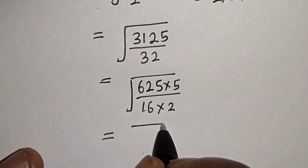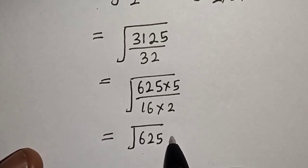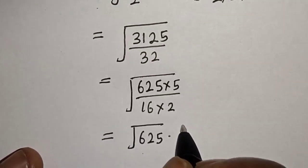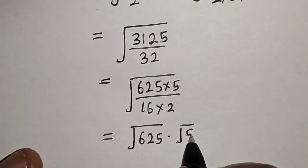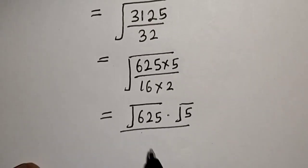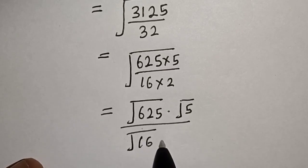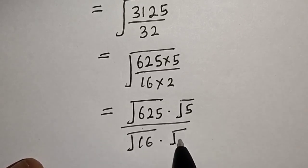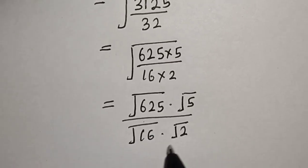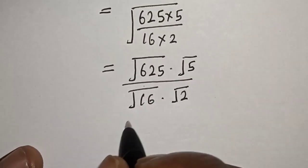We split this as the square root of 625 multiplied by the square root of 5, over the square root of 16 multiplied by the square root of 2. The square root of 625 is 25.